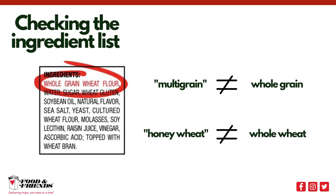Checking the ingredient list on packages is the best way to know if a food contains whole grains. Look for words like whole wheat flour, whole grain, stone ground whole, brown rice, oats, or oatmeal. Multi-grain may contain whole grains, but it is usually a mix of refined grains. Terms like wheat and honey wheat do not mean they are whole wheat or good sources of fiber. When selecting grains, it is a good idea to make at least half of the grains you eat in a day whole grain.